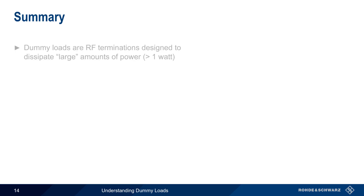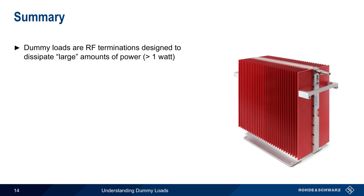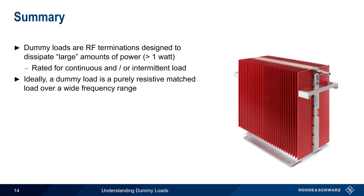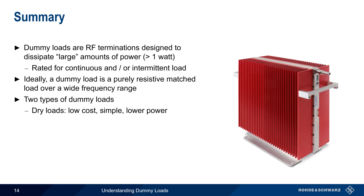Let's end with a brief summary. A dummy load is a special type of RF terminator designed to dissipate or sink large amounts of power — by large, we mean more than about 1 watt. Ideally, a dummy load presents a purely resistive, matched load over a wide frequency range. Dummy loads can be divided into two general categories based on how they dissipate heat. Dry loads are low cost, simple, and used for lower powers, dissipating heat via simple air convection. Wet loads have higher cost and complexity since they use liquids to dissipate heat, but they're able to handle higher powers than dry loads.